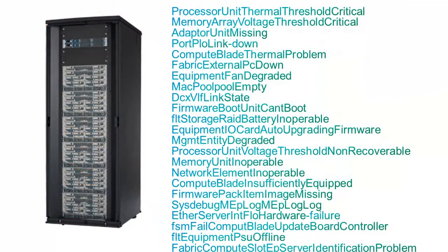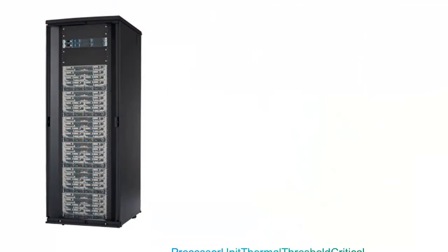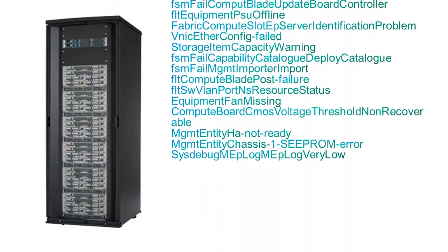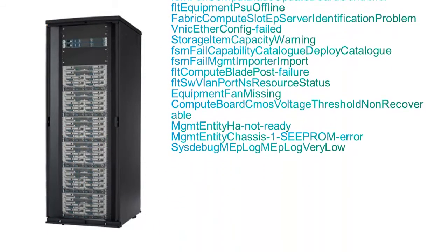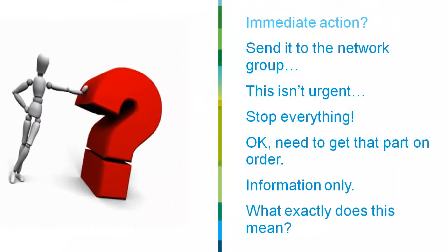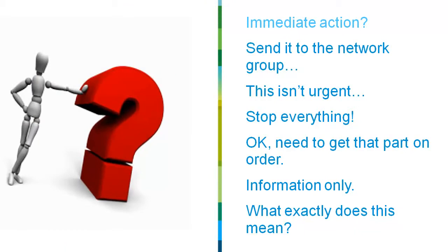The UCS system has the ability to produce 1,309 fault codes. This number probably seems somewhat daunting, but with a little organization and explanation, you can make some informed decisions about what actions to take when you receive an alert. There are a lot of questions that go through your mind when you receive a fault or alert from your Cisco UCS. Which codes require immediate action? Which are relatively benign? You must be able to effectively and efficiently determine what action to take in order to have good operational efficiency in your data center.